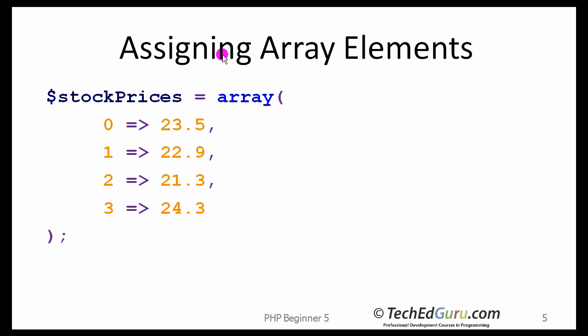In this example, we are creating an array of four elements and then assigning a value to each element. In real world situations, you will probably read the stock prices from a database or a file. Here I am providing the index values — 0 to the first, 1 to the second, 2 to the third, 3 to the next one, and so forth. Of course, even if I did not, those are the default indexes the array would have.